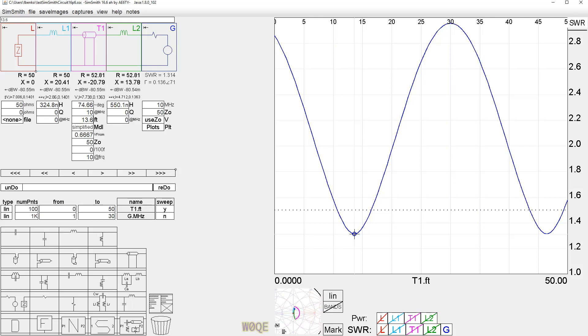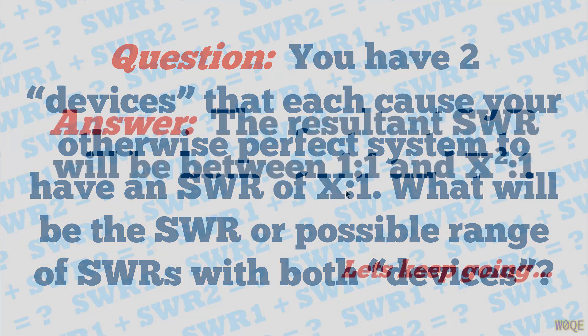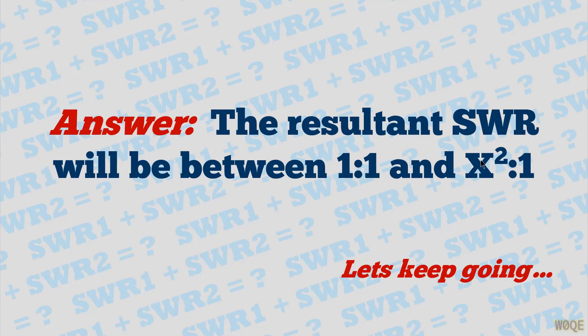We've answered the question: two devices that each cause your system to have an SWR of 1.5 to 1 will result in a combined SWR between 1 to 1 and 1.5 squared, or 2.25 to 1. You can continue on — change SWRs, add a third device, add more transmission line — and you'll keep learning more about what's going on and understand SimSmith better. If you like these simple topics or want more complicated ones, let me know.